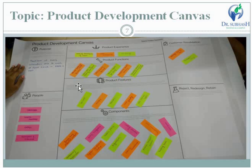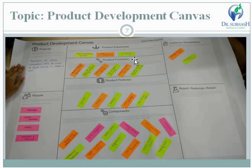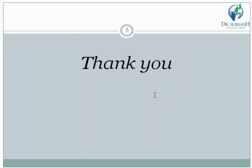So you can write all types of Product Development Canvas sections based on the activity. First, write the purpose, then the number of people, product experience, features, components, and customer revalidation. User feedback is important in the Product Development Canvas — some items will be rejected and redesigned. For example, in a parking slot, whether the vehicle parking is large or small is one type of reject and redesign purpose in Alpha Mall. Thank you very much.